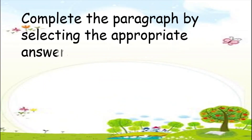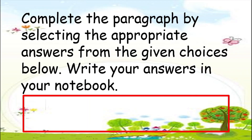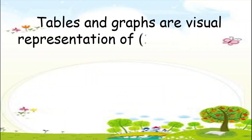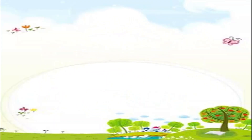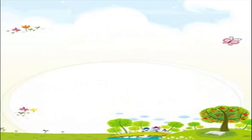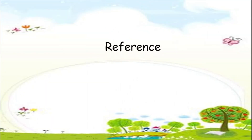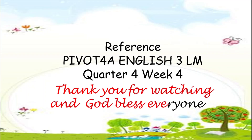For this activity, complete the paragraph by selecting the appropriate answers from the given choices: label, title, pictograph, key, and data. Tables and graphs are visual representations of data that show the relationships of information. They have a title that tells what the graph or table is about. It has a label that shows the kind of data presented. A pictograph is a type of graph that uses symbols or pictures in representing data. It has a key that shows how much its symbol stands for. I hope you learned something from our lesson. Our reference is People 4A English Relearners material for week 4. Thank you for watching and God bless everyone.